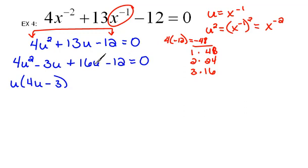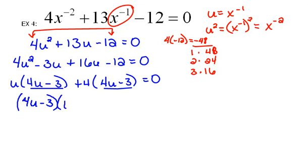So we would have 4u minus 3. In the second two terms, we have a common 4. So if we pull a 4 out, we would have 4u minus 3. And now that gives us a common factor of 4u minus 3. So if we pull that out, we have left u plus 4.